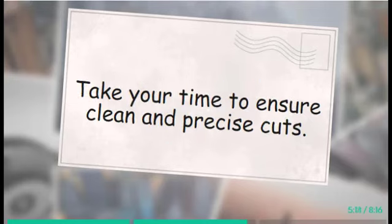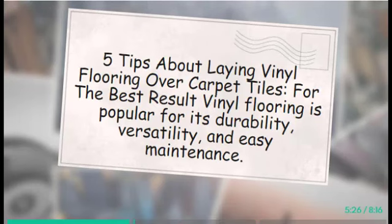Step 6: Trim and Finish. Once the vinyl flooring is installed, trim any excess material along the edges using a utility knife or a vinyl cutter. Take your time to ensure clean and precise cuts. Install baseboards or molding around the room's perimeter to give the flooring a polished and professional finish.